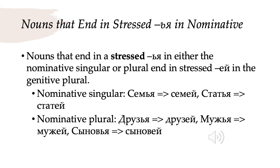Now let's look at some nouns that are a little bit more unusual. Let's start with nouns that end in a stressed мягкий знак + я in the nominative — either the nominative singular or the plural. If you see a stressed мягкий знак + я in either form of the nominative, then they will take a stressed -ей ending in the genitive plural. So семья, family, becomes семей; статья, article, becomes статей. These nouns have this stressed мягкий знак + я in the nominative singular. If we have this stressed я in the nominative plural, the same thing happens: друзья becomes друзей in the genitive plural; мужья becomes мужей; сыновья becomes сыновей.